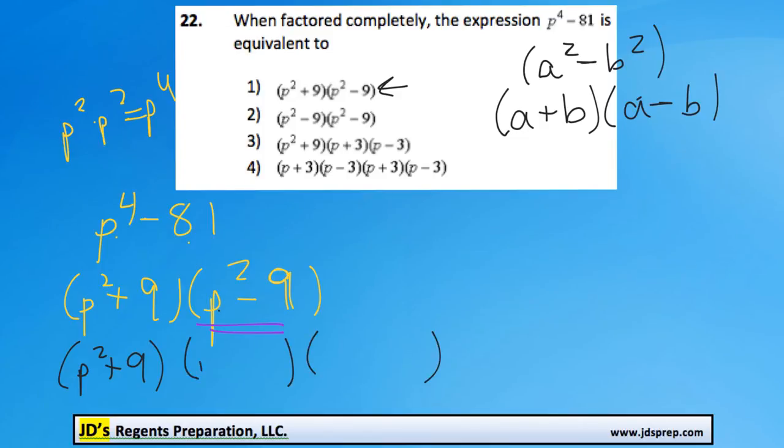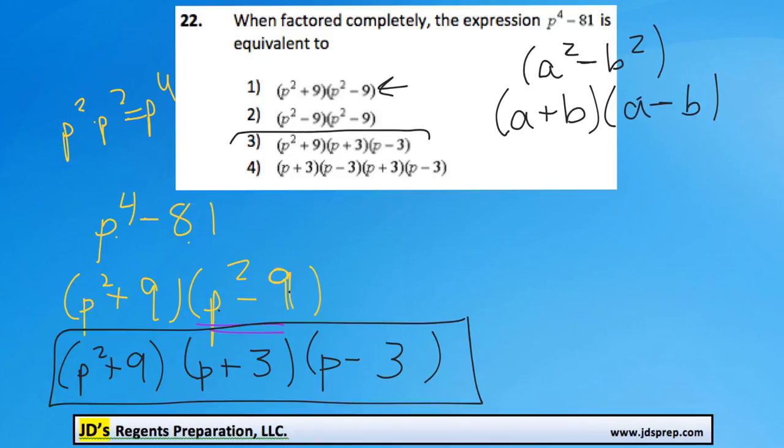The square root of p squared is p, and the square root of 9 is 3. So this is the final full factored form of the expression, and we can see that matches option number 3. So that is our answer.